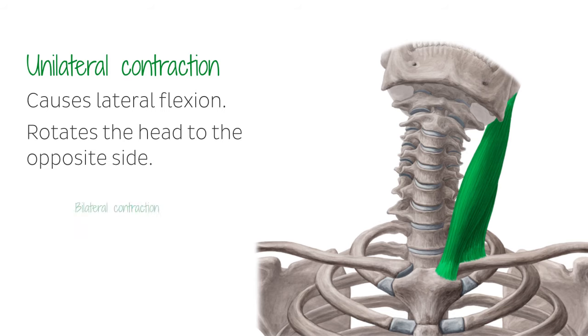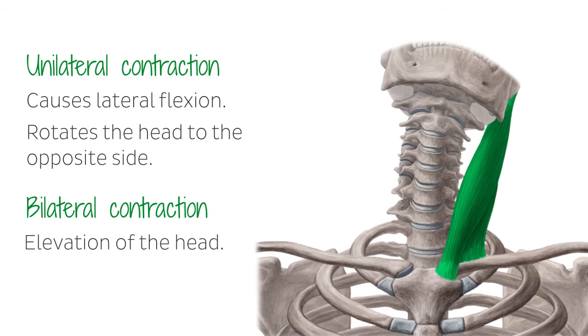A bilateral contraction leads to an elevation of the head, otherwise called dorsal extension. In addition, it supports inspiration, providing that the head is holding still.